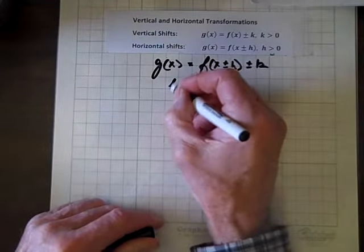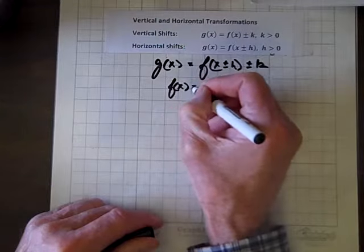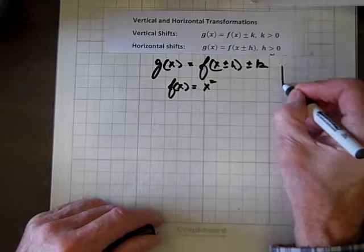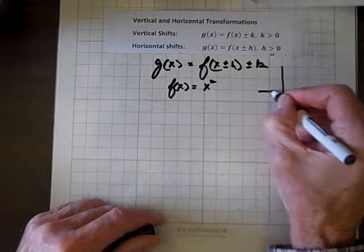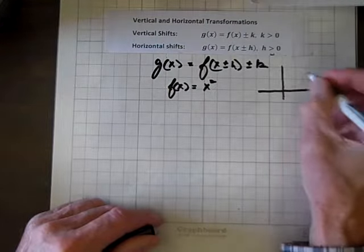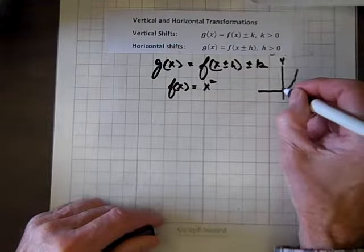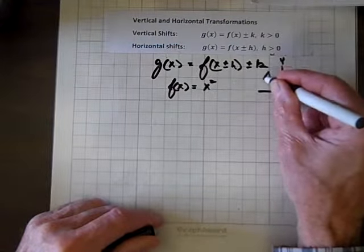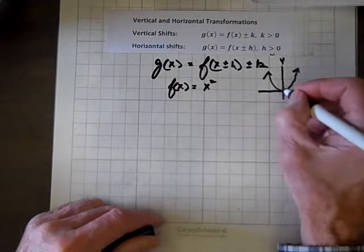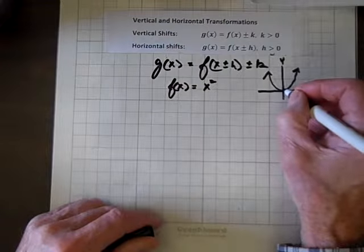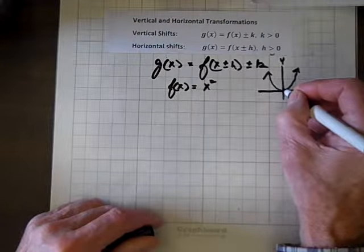So let's let our f of x equal x squared, and when we graph that, we have a parabola whose x and y-intercepts occur at the origin, there's our vertex, and it's also the location of the x and y-intercepts.